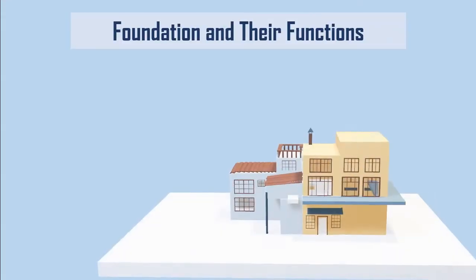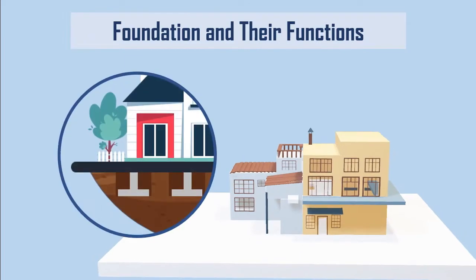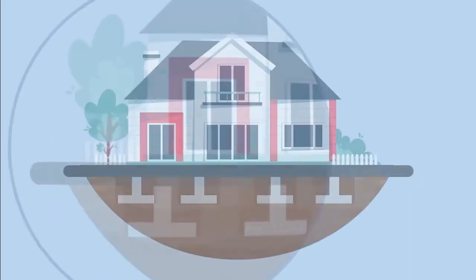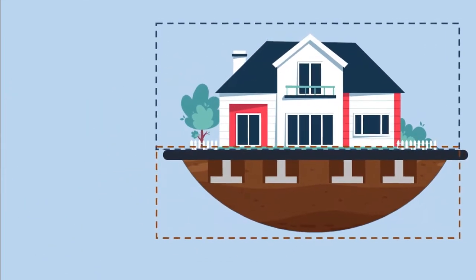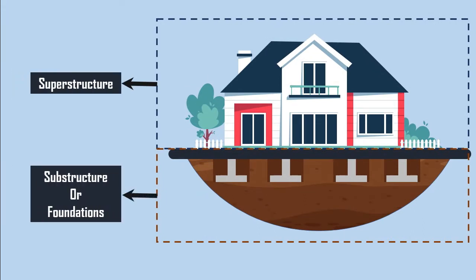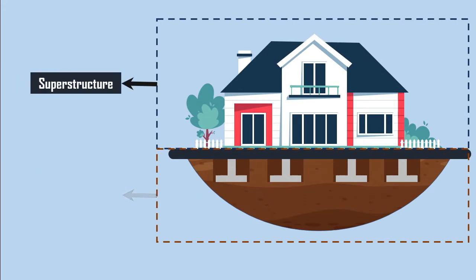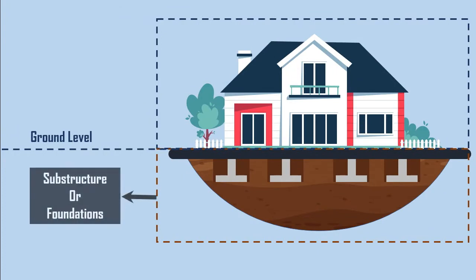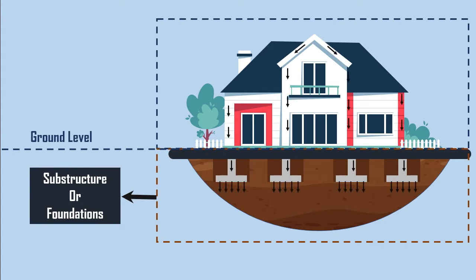In today's video we shall focus on the foundation and their function. A building consists of two basic components: the superstructure and the substructure. The superstructure is the part of a building located above ground level, whereas the substructure or foundation is the lower portion usually located below ground level, which transmits the load from the superstructure to the subsoil safely.